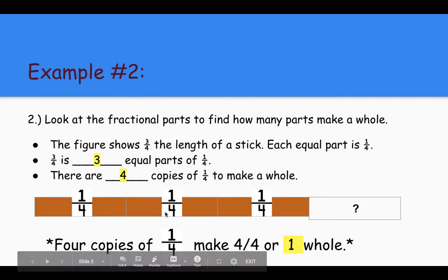There are four copies of one-fourth to make a whole. Four copies, right? One, two, three, four. So this is the one that's missing. We'd have to add on one more fourth to make it a whole. Four copies of one-fourth make four out of four, or one whole. Awesome.